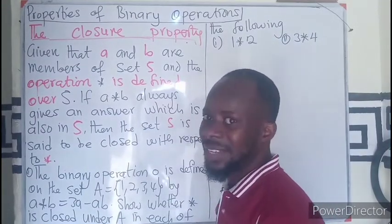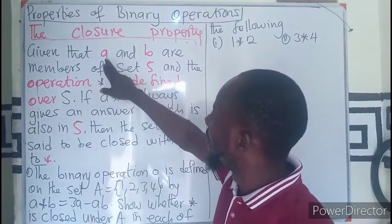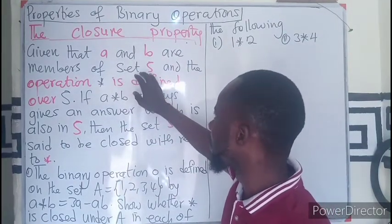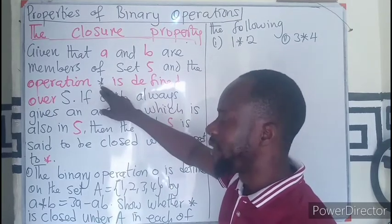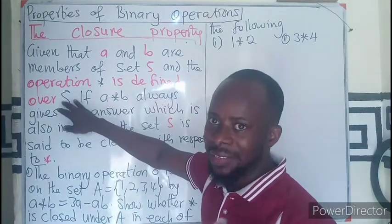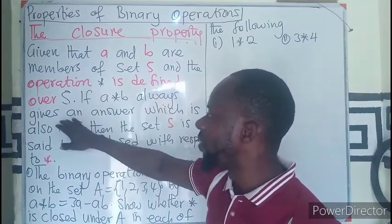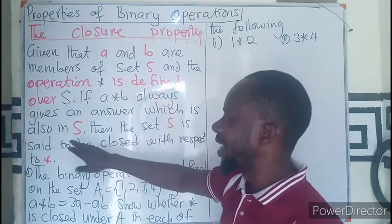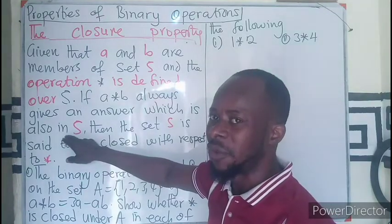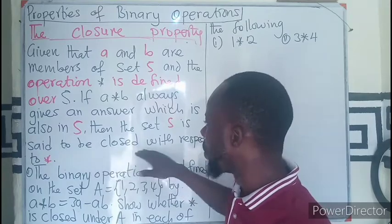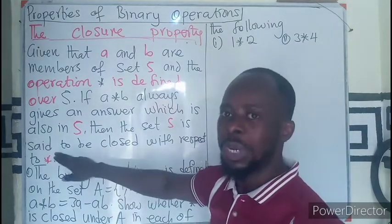Given that the terms A and B are members of a given set and the operation is defined over the set, if A star B always gives an answer which is also an element of S, then the set S is said to be closed with respect to the operation.